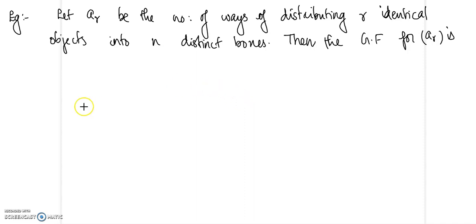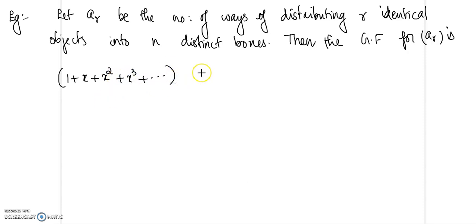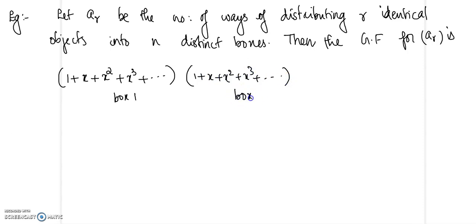There are no restrictions — boxes can be empty or non-empty. So each box can contain zero objects, one object, two objects, and so on. Box one is represented by 1 + x + x² + x³ + ..., and box two is similarly represented by 1 + x + x² + x³ + ..., and the same holds for box n.